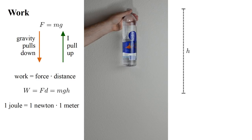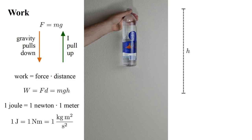We define one joule, the unit of work, as one newton of force acting through one meter of displacement. Its symbol is capital J and we write one joule equals one newton meter. A newton is one kilogram meter per second squared.